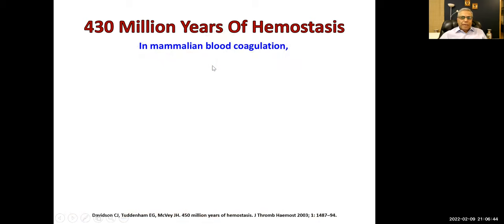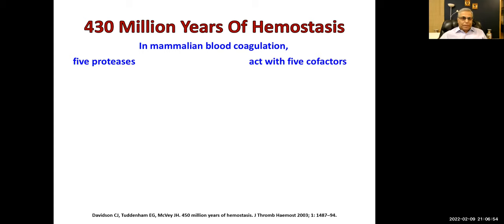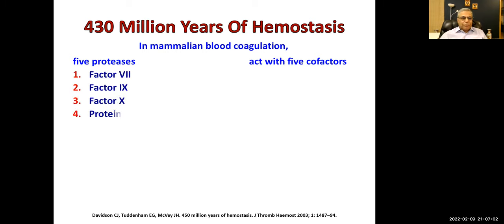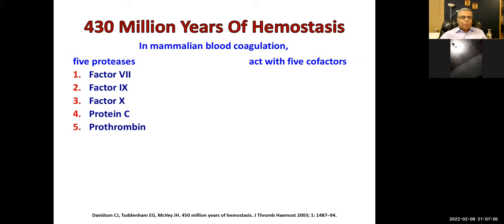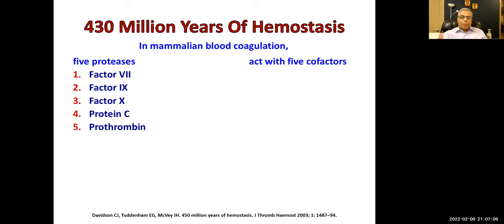In the mammalian blood coagulation system, we find a few proteases and cofactors in all mammals. There are five basic proteases and five basic cofactors. Factor 8, factor 9, factor 10, and protein C are serine proteases that break down the next clotting factor into its active form.